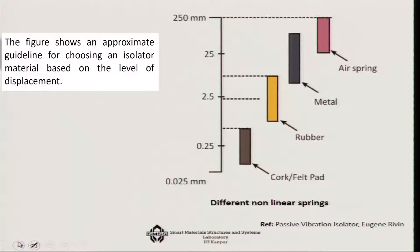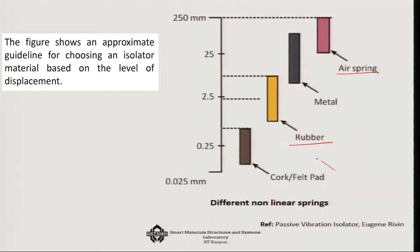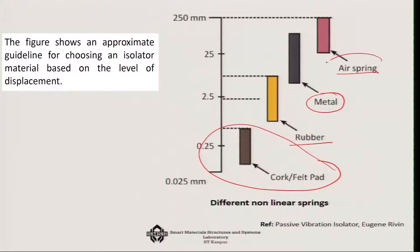We have seen many varieties of springs: felt pads, coil meshes, metallic variations, air springs, and rubbers. Each has a typical operating range generally defined by the level of displacement amplitude. For small displacement amplitudes, cork or felt pads are used; for larger amplitudes, rubber; even larger, metal springs; and for maximum displacements up to around 250 millimeters, air springs are used. So depending on the amplitude of displacement, isolators are chosen accordingly.